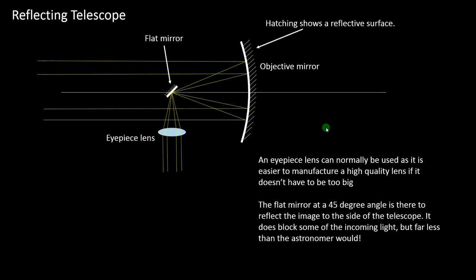The reason for the flat relay mirror is that if we didn't use it and put the eyepiece lens in line, it would block the incoming light — or the astronomer would. The flat mirror moves the image to the side so it can be observed. Although it blocks a tiny amount of light near the principal axis, in practice this doesn't significantly affect image formation since the telescope only uses some of the light from the object anyway. So that's telescopes — how they work and why we use mirrors rather than lenses in large telescopes.